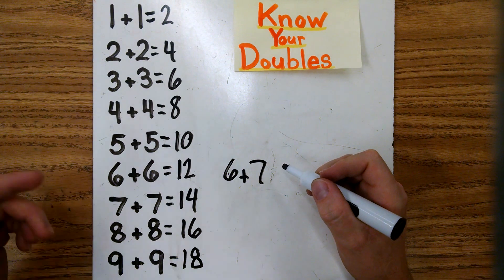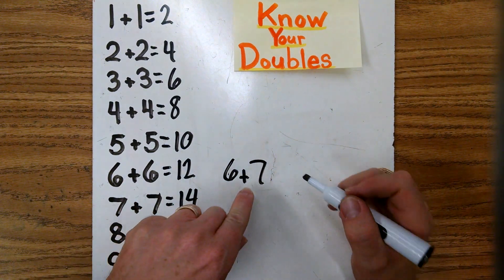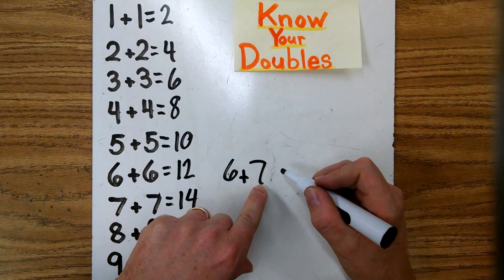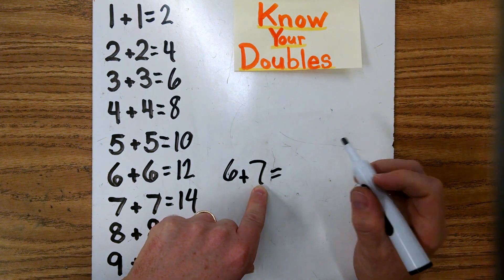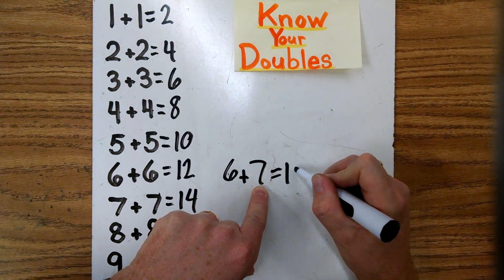If you know automatically that 6 plus 6 gives you 12, then when you see this, you'll know that that's just one more. And so if 6 plus 6 gives you 12, 6 plus 7 would give you 13.